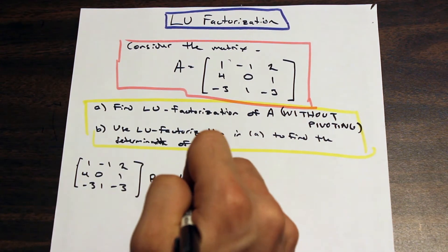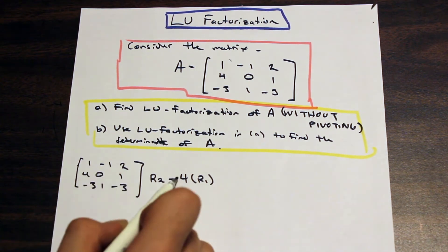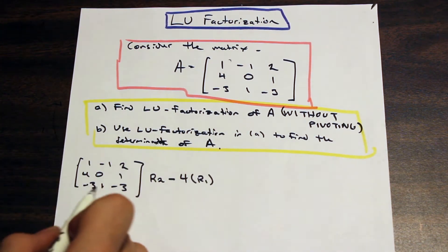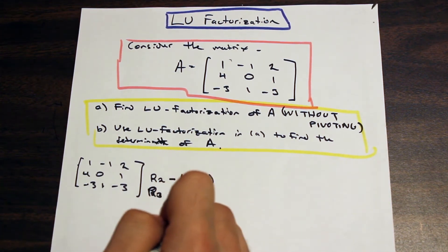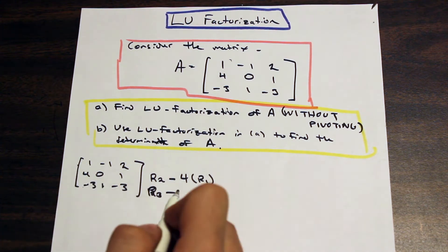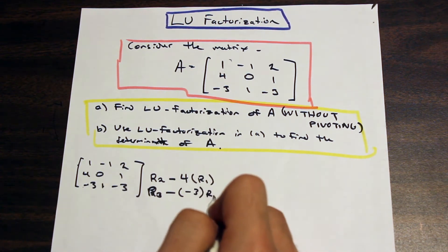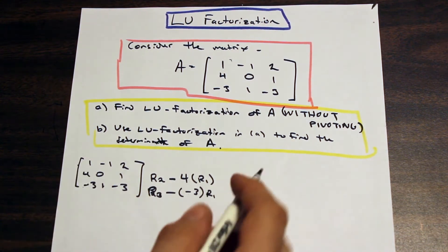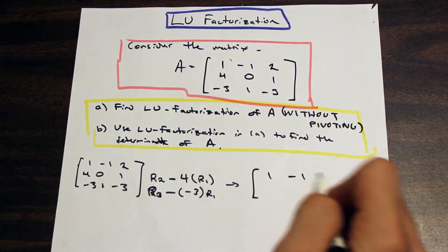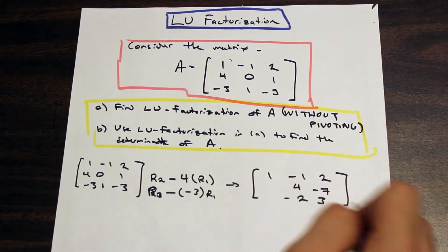We need to multiply row 1 by 4 to eliminate the row 2 first entry: 4 minus 4 equals zero. For row 3, we go r3 minus (negative 3) times r1, so minus three times row 1 makes that entry zero. After these row operations, the resulting matrix is: row 1 (1, -1, 2), row 2 (0, 4, -7), row 3 (0, -2, 3).